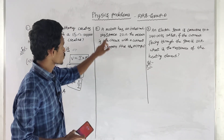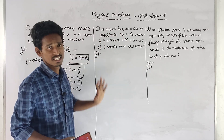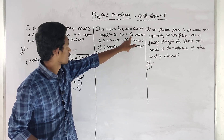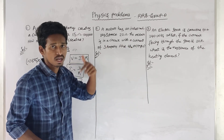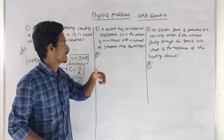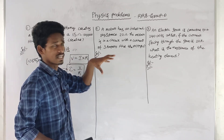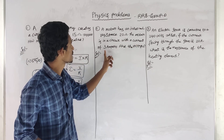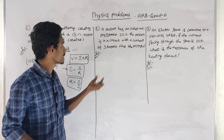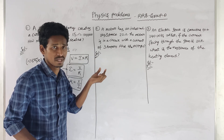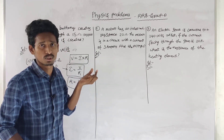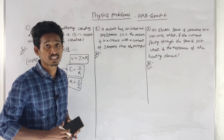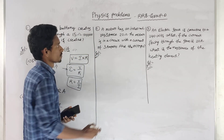Let's do the next problem. A motor has an internal resistance of 20 ohms. The motor is connected to an electric circuit with a current of 3 amperes flowing. What voltage is going to be?